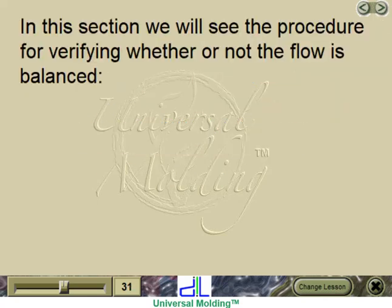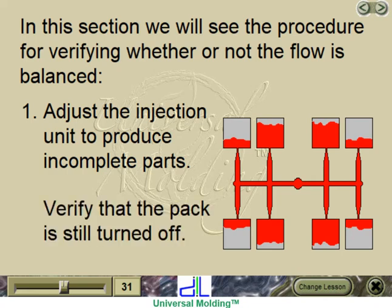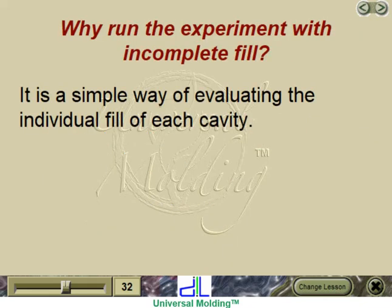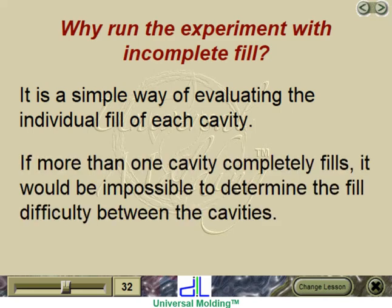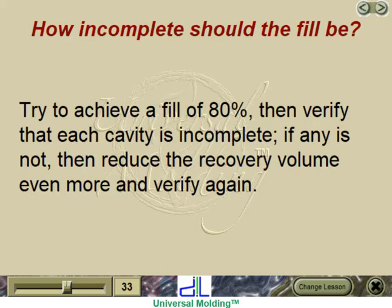Balancing the fill. In this section we will see the procedure for verifying whether or not the flow is balanced. Step 1: Adjust the injection unit to produce incomplete parts and verify that the pack is still turned off. Try to achieve a fill of 80%, then verify that each cavity is incomplete. If any cavity is not incomplete, reduce the recovery volume even more and verify again.